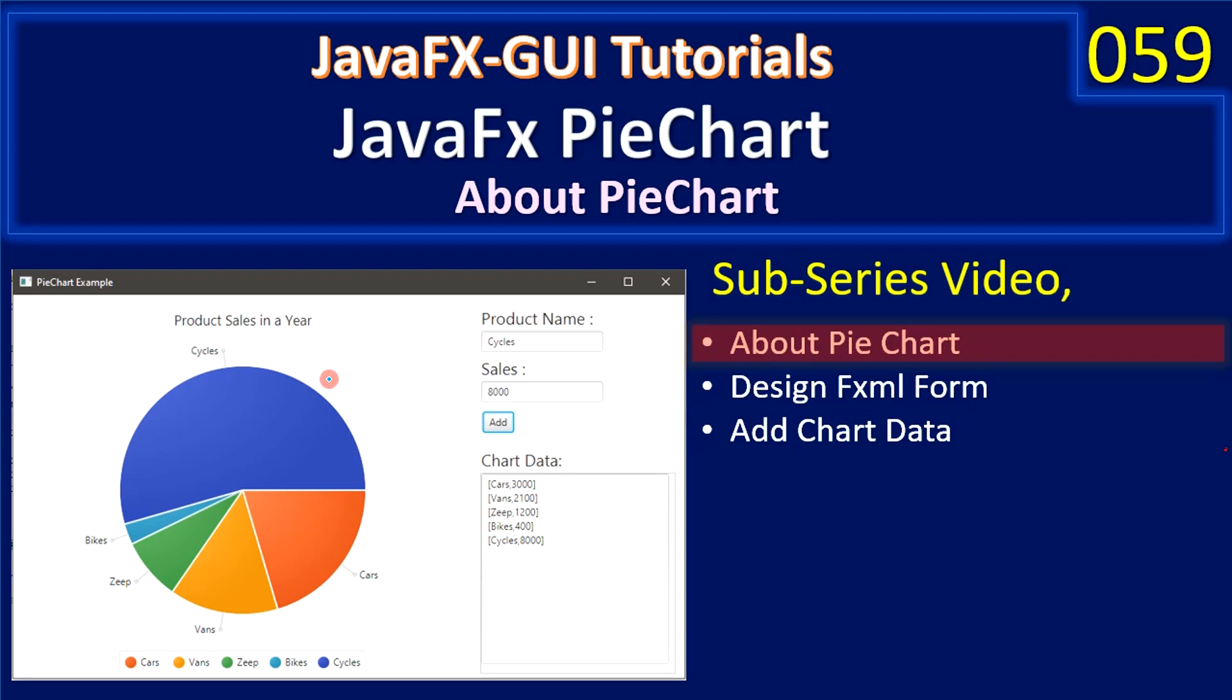As shown here in the left side screenshot, the user will enter the product name, then they will enter sales. You can take it in any way: sales in a week, month, or year. Likewise, they can add multiple products and the data is shown here.